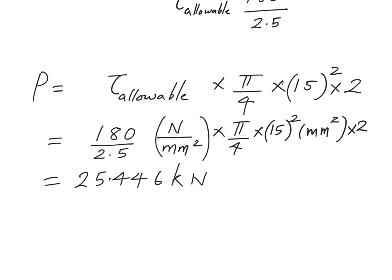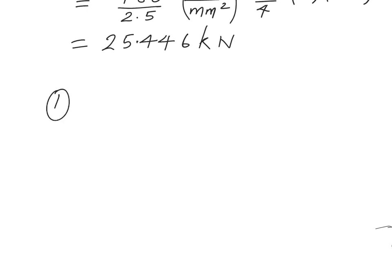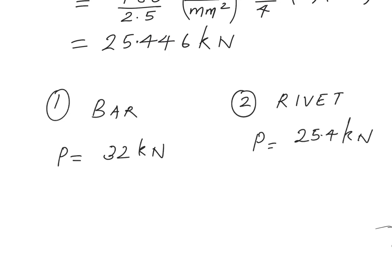So now considering the two design elements, initially I considered the safe design of the steel bar which was loaded in tension, and second I considered the safe design of my rivet taking into account their material properties. In the first case I obtained that the maximum load the joint can withstand is 32 kilonewtons. In the second case for the safe performance of your rivets the load was around 25.4 kilonewtons.